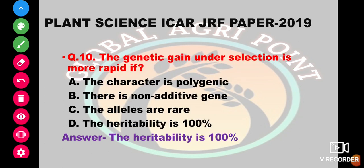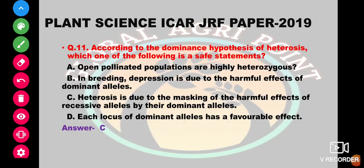The genetic gain under selection is more rapid if the character is polygenic, there is no non-additive gene action, alleles are rare, or heritability is 100 percent. The genetic gain under selection is more rapid when heritability is 100 percent.